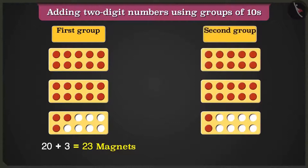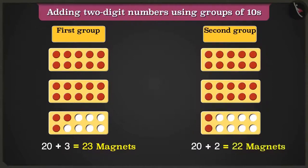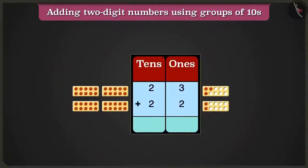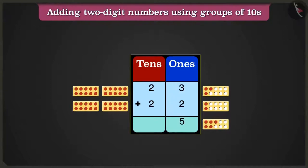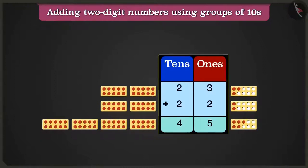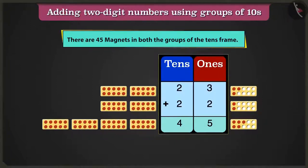In the next group of tens frame, adding ten and ten makes twenty, and adding two more will be equal to twenty-two magnets. Now to add the numbers twenty-three and twenty-two, we have to write them in the table of tens and ones. In the box of ones, we will add the numbers three and two. Three ones plus two ones will equal five ones. Two tens plus two tens will make four tens. So here there are four tens and five ones. Therefore, in both the groups of the tens frame, there are forty-five magnets altogether.